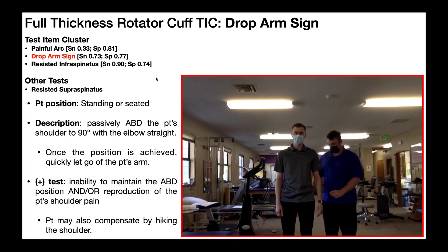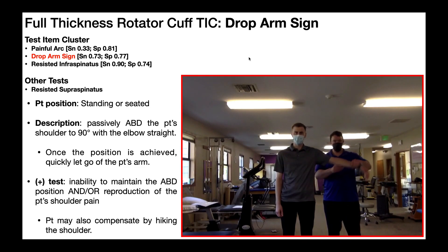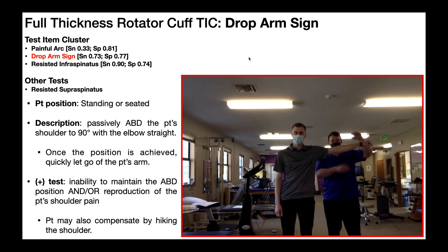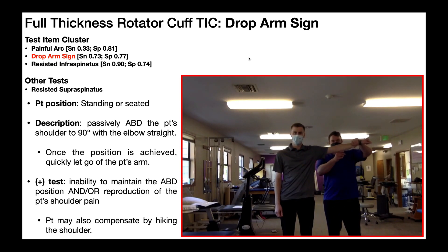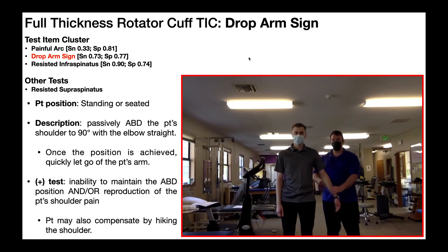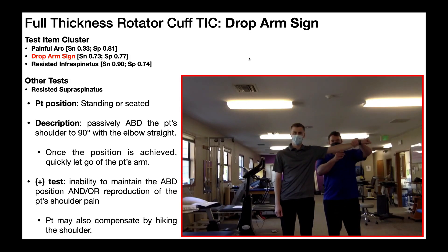First, let's look at a negative test. I take the arm, passively abduct the shoulder to 90 degrees, elbow straight, and then I let go. That's clearly a negative test because when I let go, he's able to quickly activate those muscles and hold the position, and he had no pain. That is a negative drop arm test.